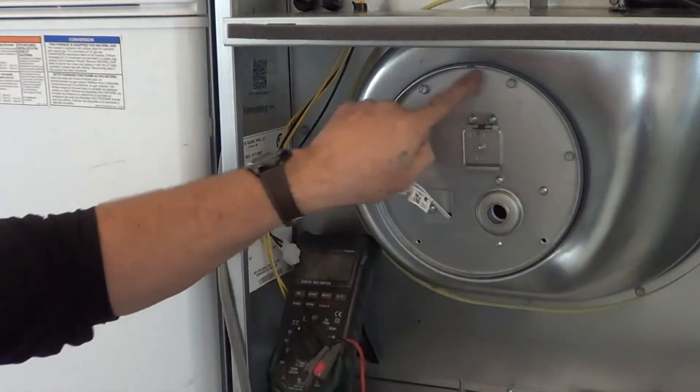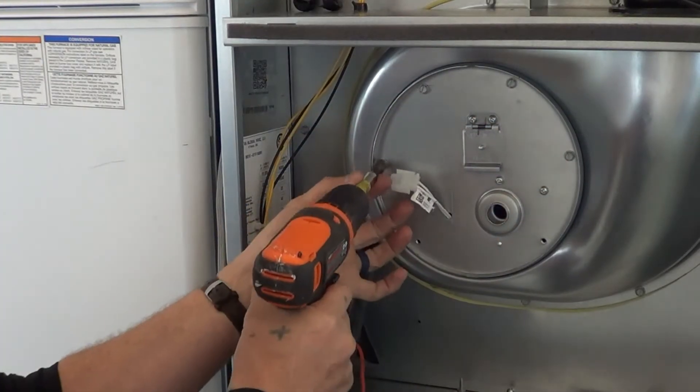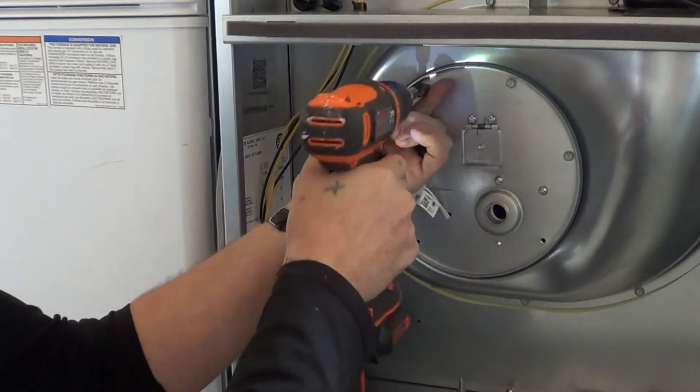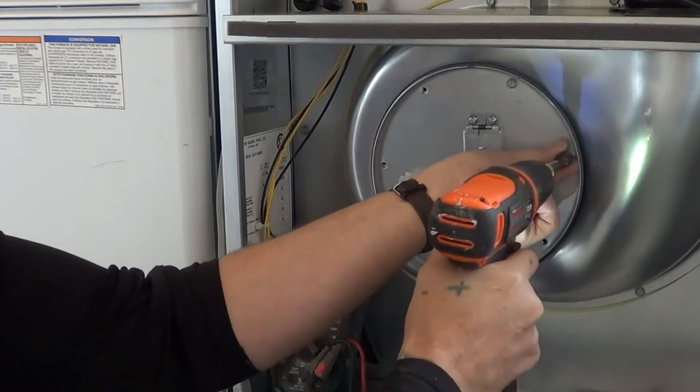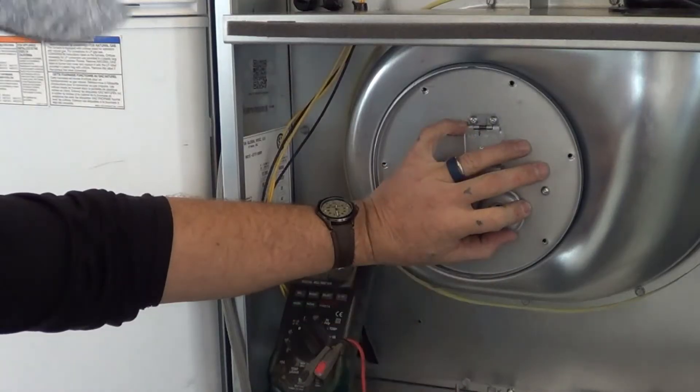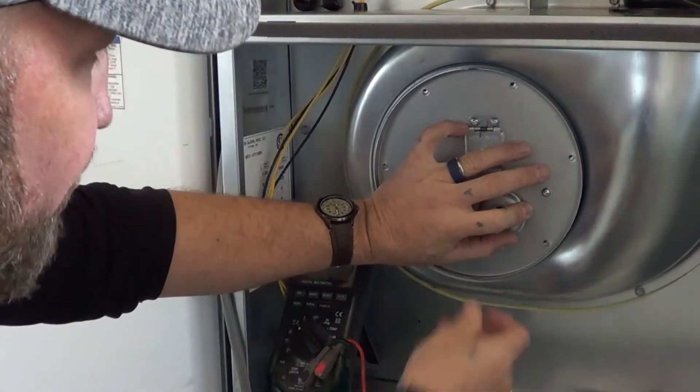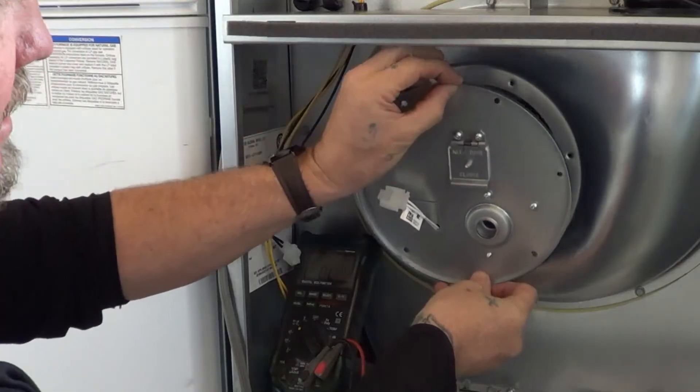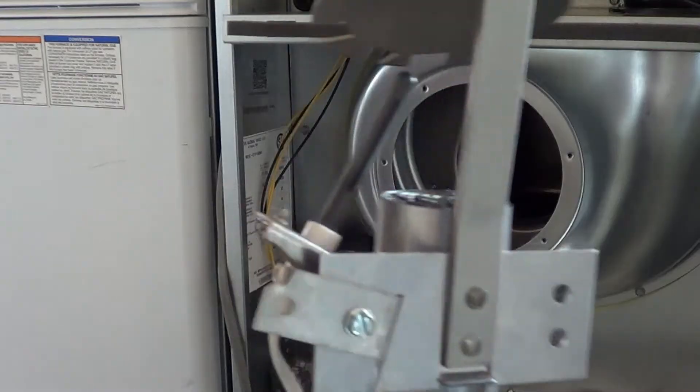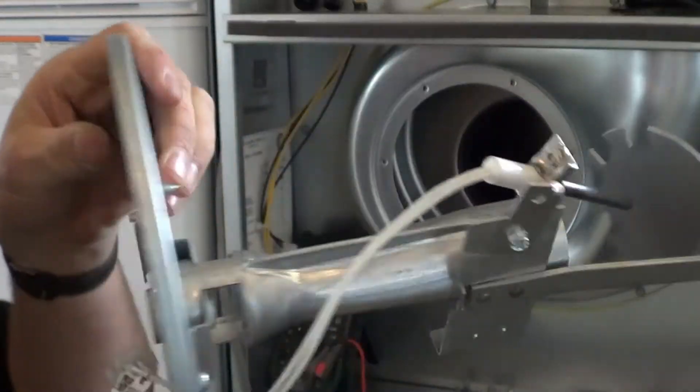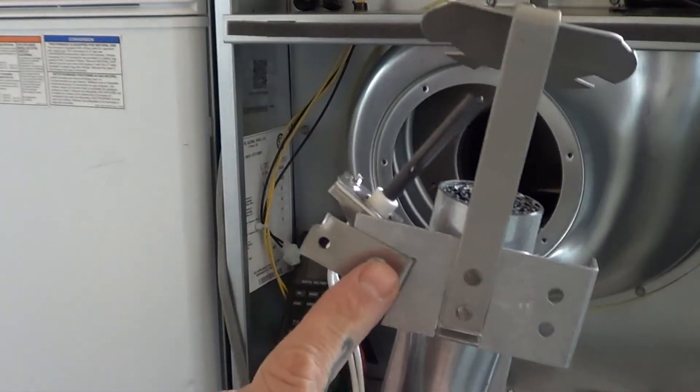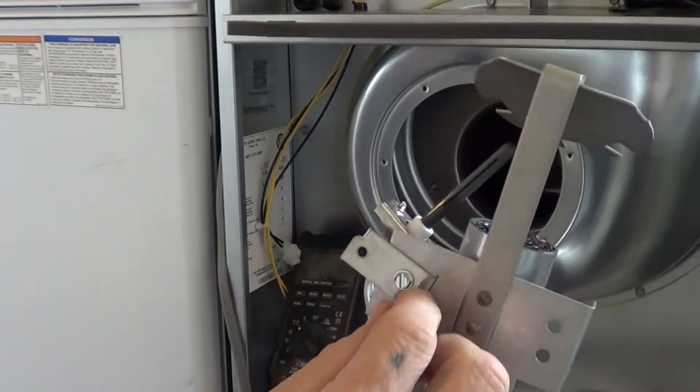Then we're going to need to take all these screws out here. On the last screw, make sure to hold this real tight, and you're going to pull this straight out and up a little bit, up and back like that. This is what that looks like—that's the igniter there.